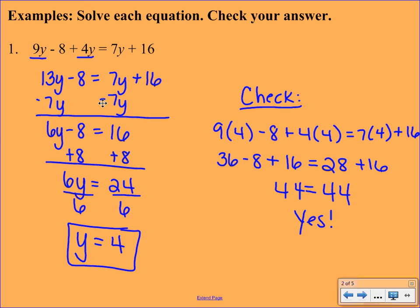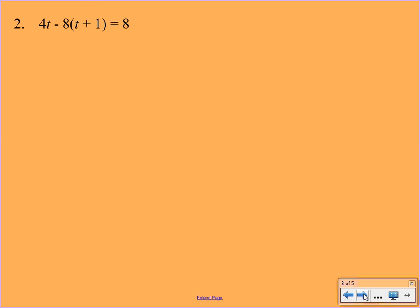All right. So next, we have an example that will involve the distributive property. This is kind of a roadmap problem here because we draw a lot of arrows to kind of help you visualize what's going on here.